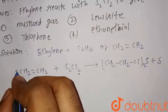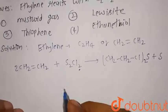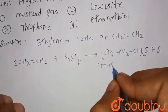So there is a formation of the mustard gas that is [CH2-CH2-Cl]2S plus S. Now we need to balance this, so there should be two. Now this is balanced, so this is our mustard gas.